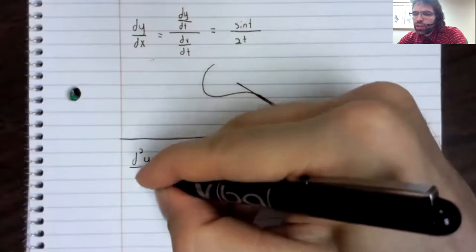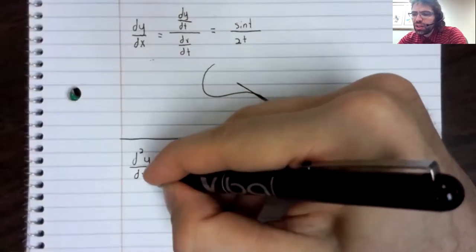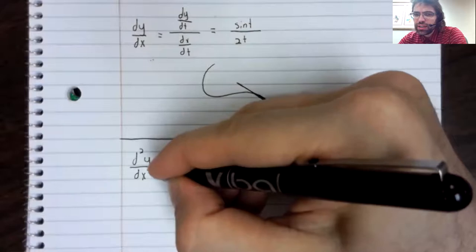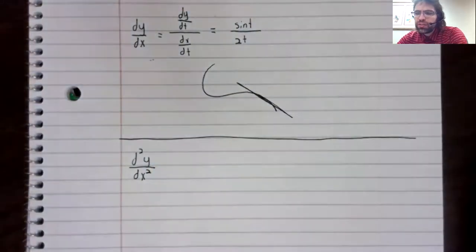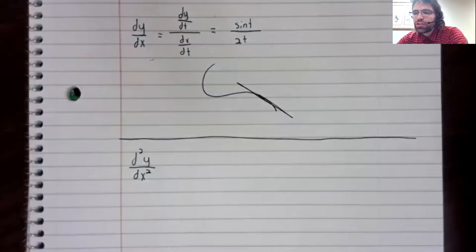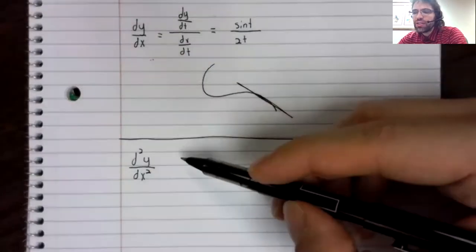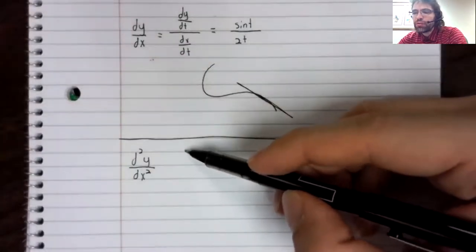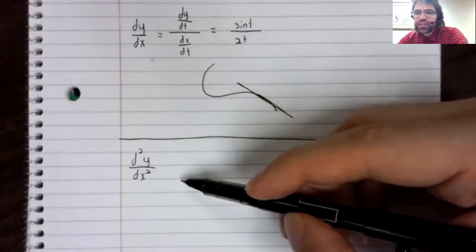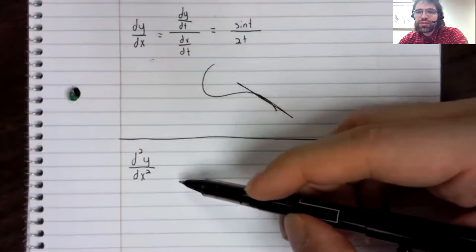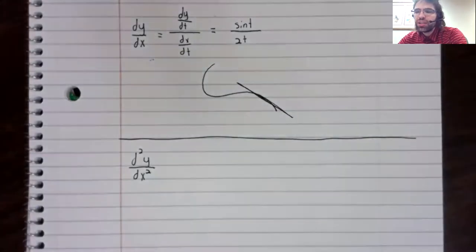And we are going to break symmetry here. That is to say, we are not going to have the second derivative of y with respect to t over the second derivative of x with respect to t.